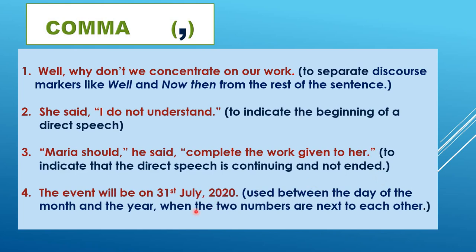The fourth sentence: 'The event will be on 31st July, 2020.' There is a comma after 'July.' This is how we use commas in dates — to separate the day of the month and the year. Never make a mistake when writing dates. Place the comma after the month to show a separation.